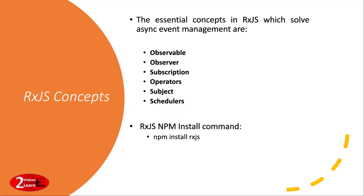Observable represents an invocable collection of future values or events. Observer is a collection of callbacks. Subscription represents the execution of an observable. Operators are pure functions that enable a functional programming to deal with the collections. Subject is equivalent to an event emitter.